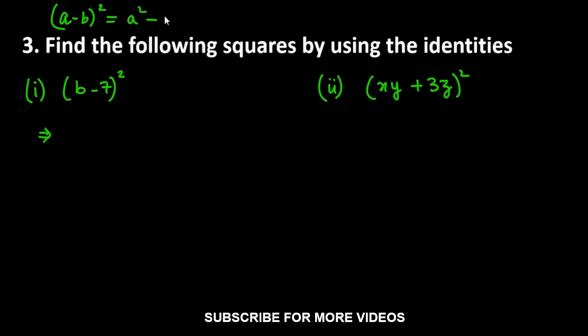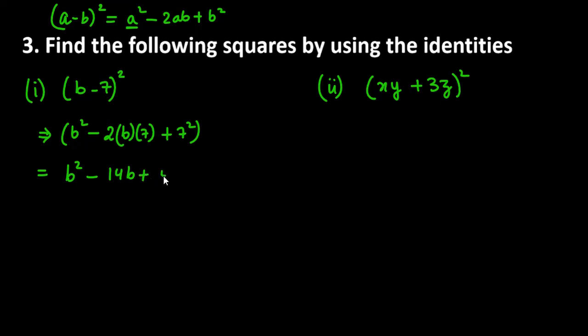Which is a square minus 2ab plus b square. Now, first term ka square, which is b square. Then, minus 2ab. That means first and second term ka product, b and 7. Last term, you have a square. So your answer is b square minus 14b plus 49.